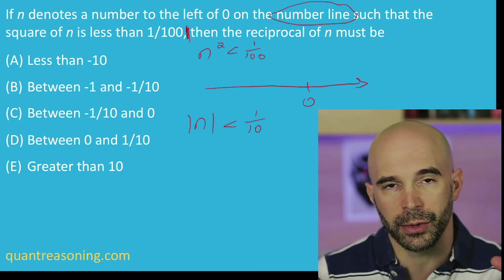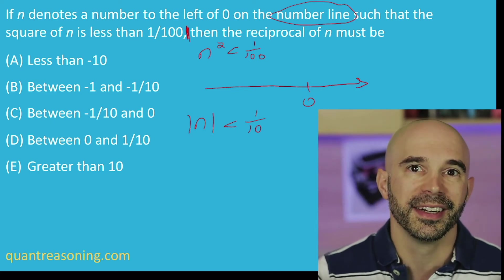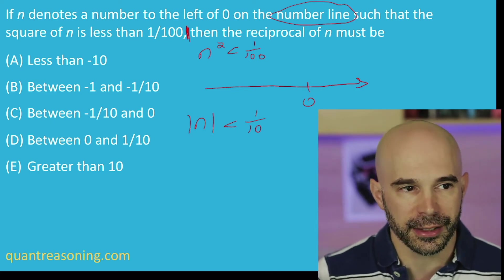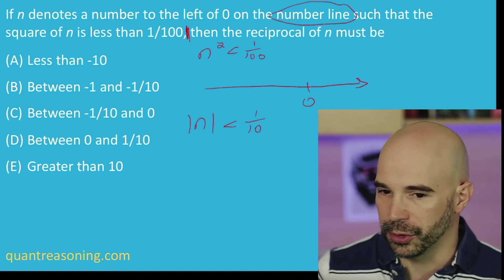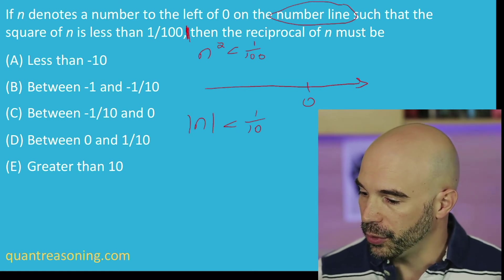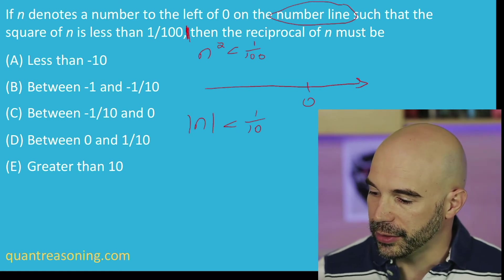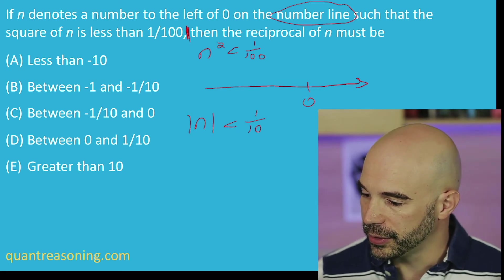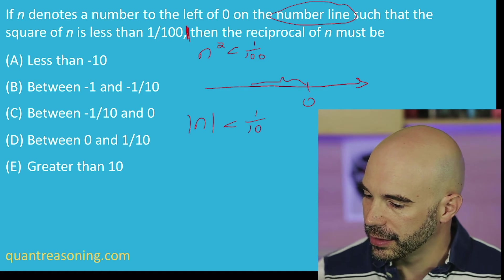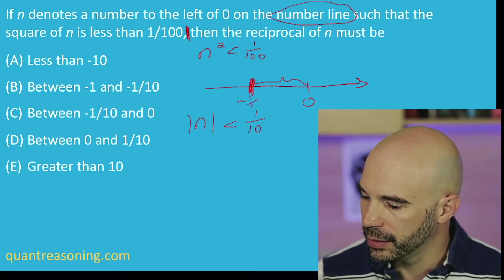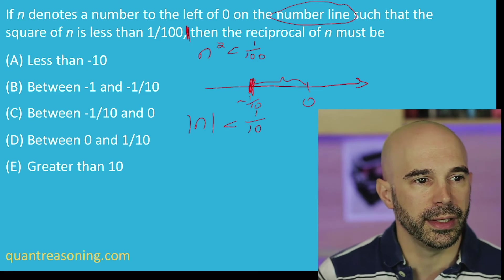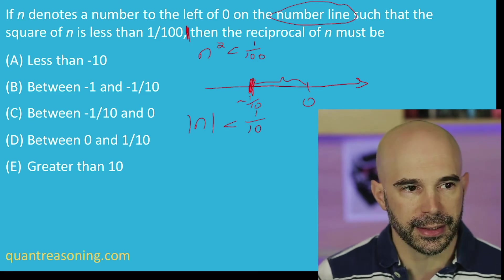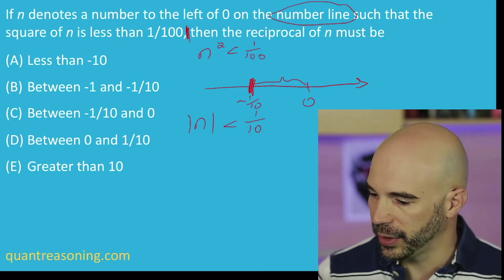I'm imagining n wearing an ankle bracelet, and the police get alerted if n goes 1 tenth of a unit away from zero or more. Now we know that n is to the left of zero, so that means that n lives somewhere in the range between negative 1 tenth and zero. That's where n lives.